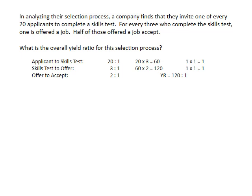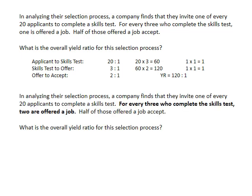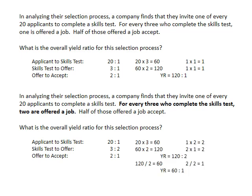For example, if I change the above example just slightly, we are going to get the following ratios. We do the same thing we did above and multiply down each side. However, here we need to make sure that we convert our yield ratio back to something to 1. We do this by dividing each side by the number we got from our initial calculation of the right-hand side, in this example by 2. This gives us an actual yield ratio of 60 to 1.